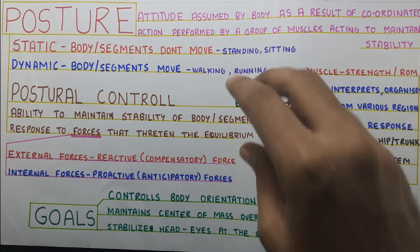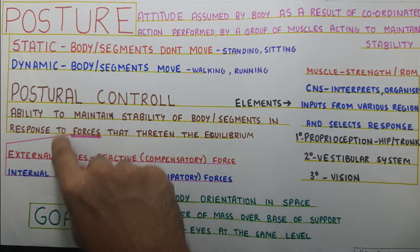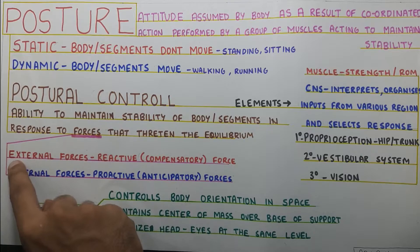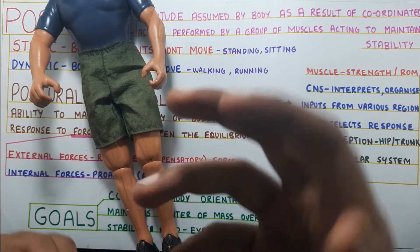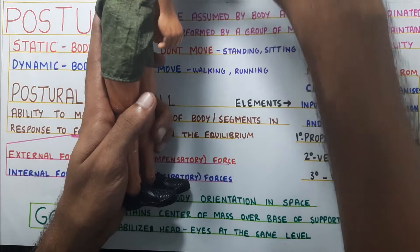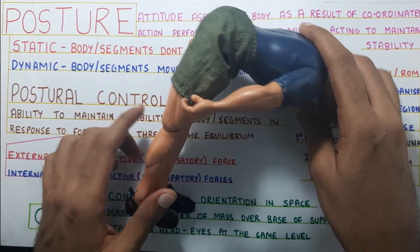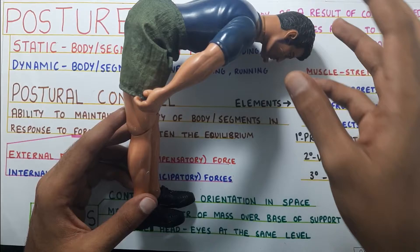When there is an external force — like if Joe is standing and I come and push him — that is an external force. Whereas an internal force would be if Joe is standing and wants to tie his shoelace, so he bends down. When he bends down he could fall forward, but he'll either contract all his muscles to create enough force to prevent falling, or he'll bend his knee to maintain the center of gravity within his base of support.